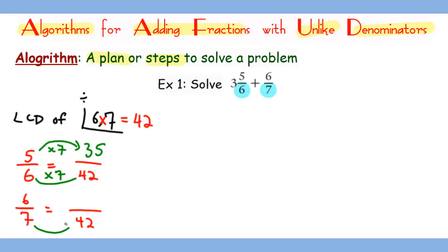To turn a 7 to 42 we times 6, so we multiply by 6 as well in the numerator and we get 36.